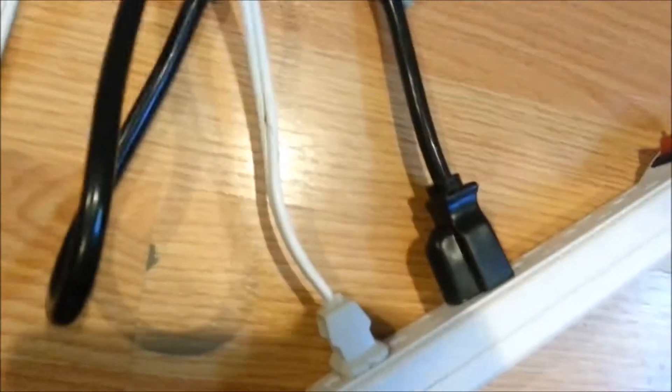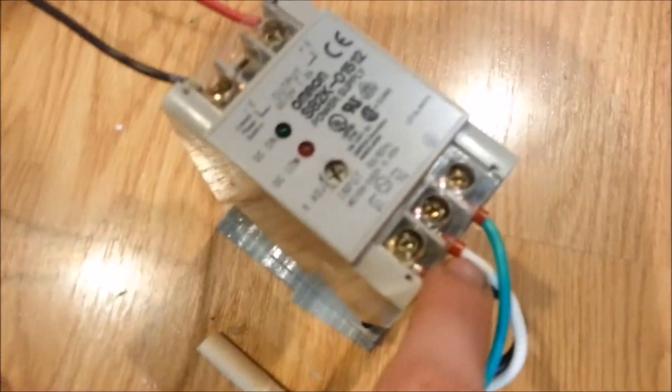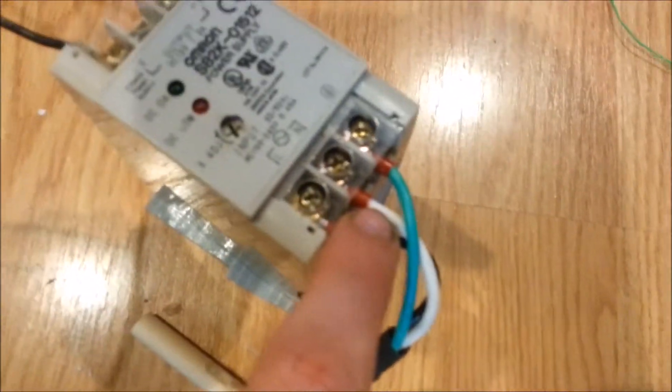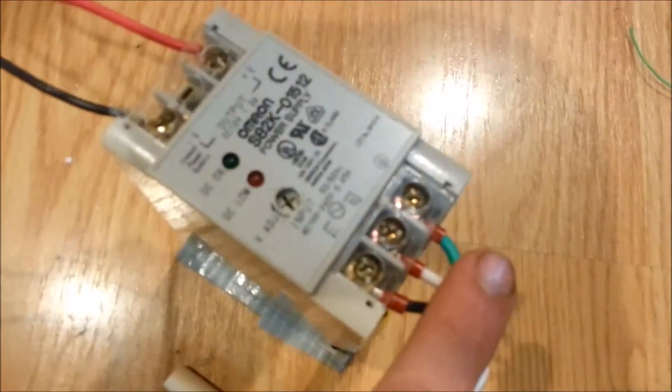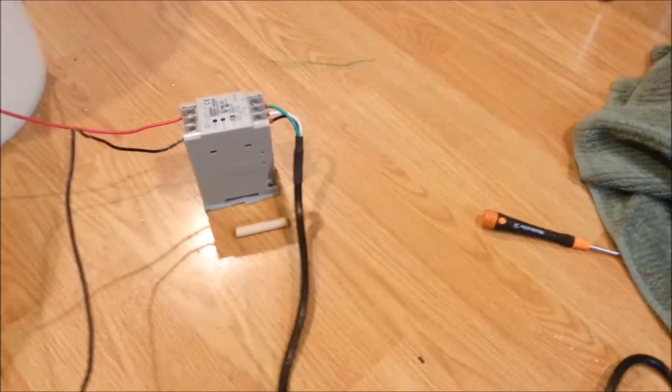Since this plug has three prongs - one here, one here, and one here, which is live, negative, and ground. The black one is live, the white one is negative, and green is always ground.